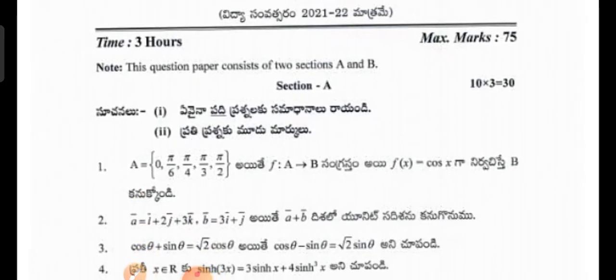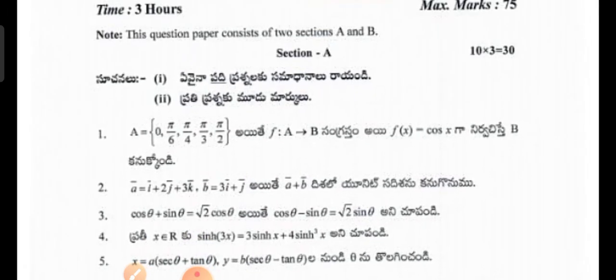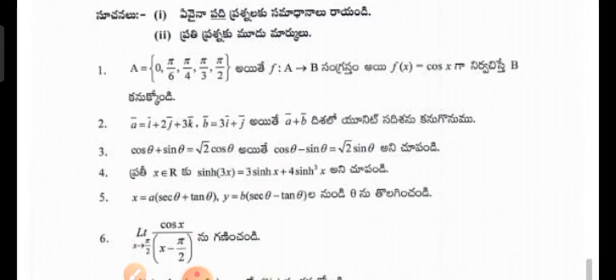Each question paper consists of two sections A and B. Maximum marks: 75. Section A - you have to attempt all the questions. There are 10 questions out of 10 we have to take. Each question carries three marks. 10 times 3 equals 30.